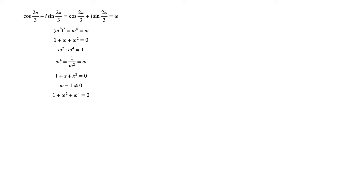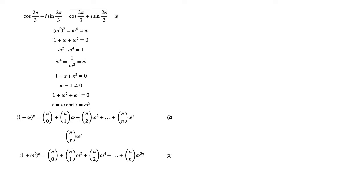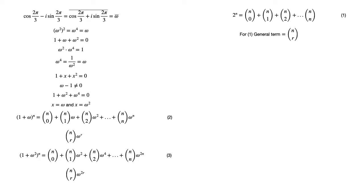Going back to the binomial expansion for (1+x)^n and replacing x with omega and omega² respectively, we are left with equations 2 and 3. Equation 2 says (1+omega)^n = n choose 0 + n choose 1 · omega + n choose 2 · omega² + ... + n choose n · omega^n, with general term n choose r · omega^r. Equation 3 says (1+omega²)^n = n choose 0 + n choose 1 · omega² + n choose 2 · omega^4 + ... + n choose n · omega^(2n), with general term n choose r · omega^(2r). Adding equations 1, 2, and 3, we study the general term and discover numerous simplifications.